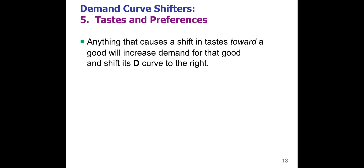Your fifth demand curve shifter is tastes and preferences. These are fads and things that are really popular for a short period of time. When things are super popular, demand rises temporarily, and eventually shifts back to the left. We see this a lot with sneakers — a famous person comes out with a sneaker brand, people get in line for hours or even days ahead of time to buy limited edition sneakers, and then over time we move on to something else.